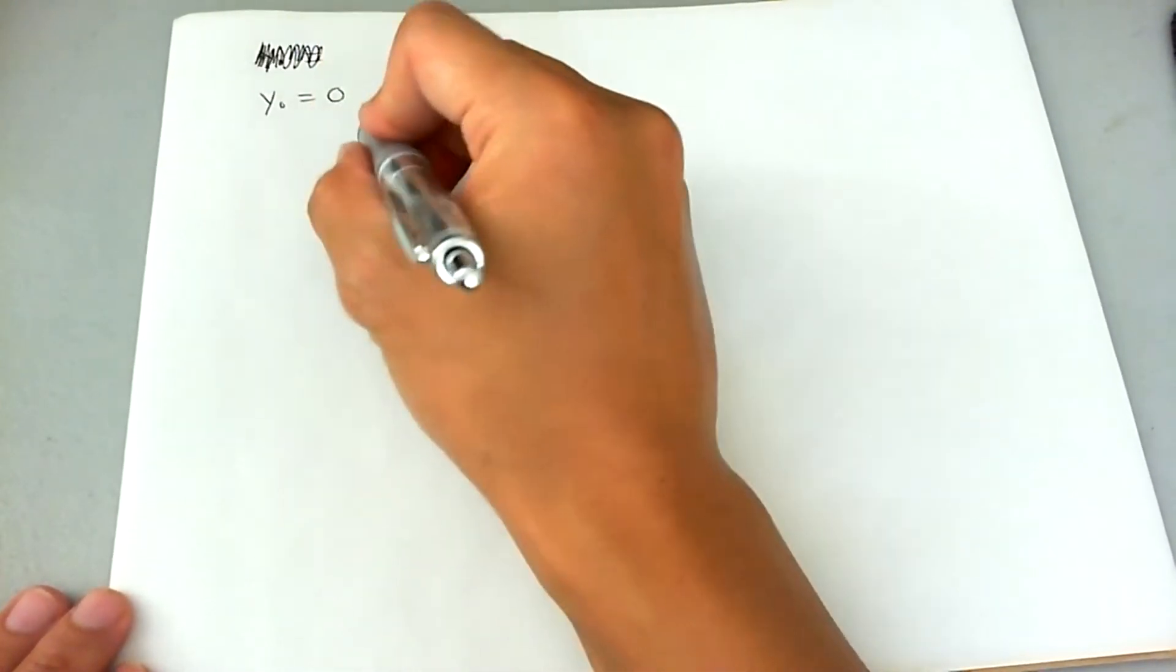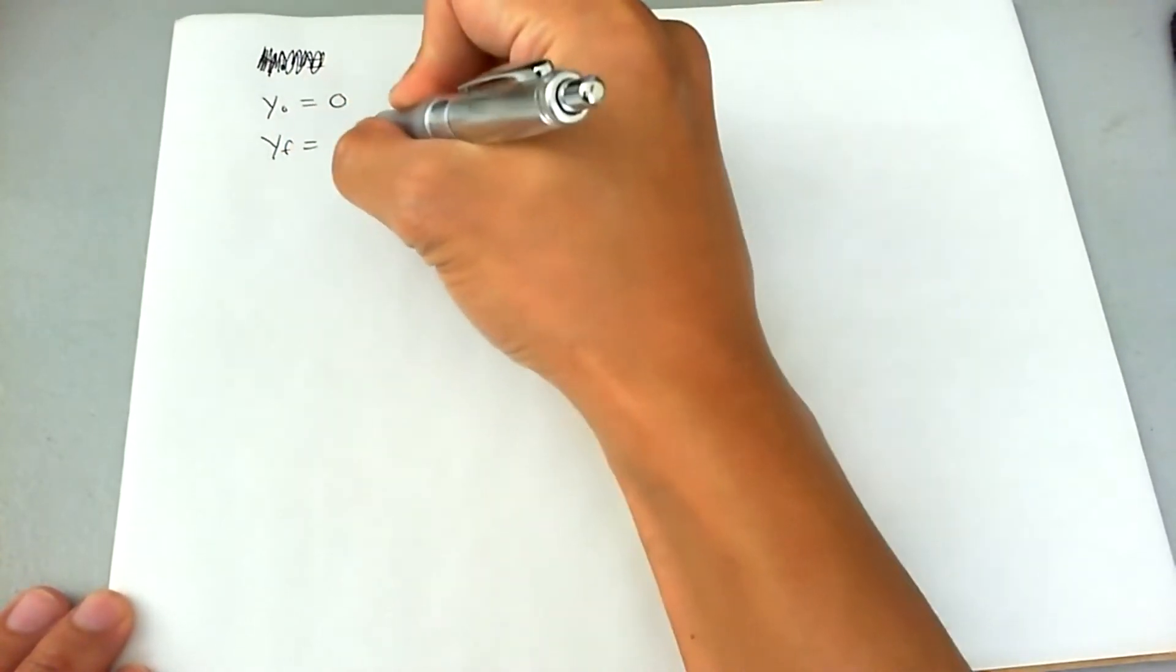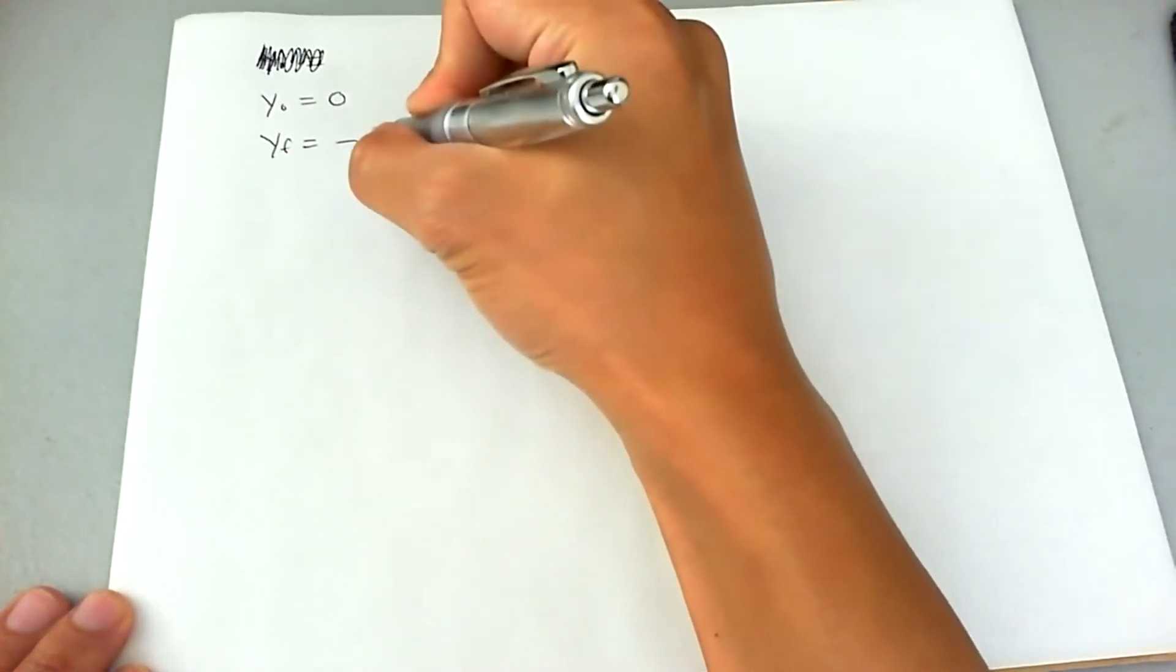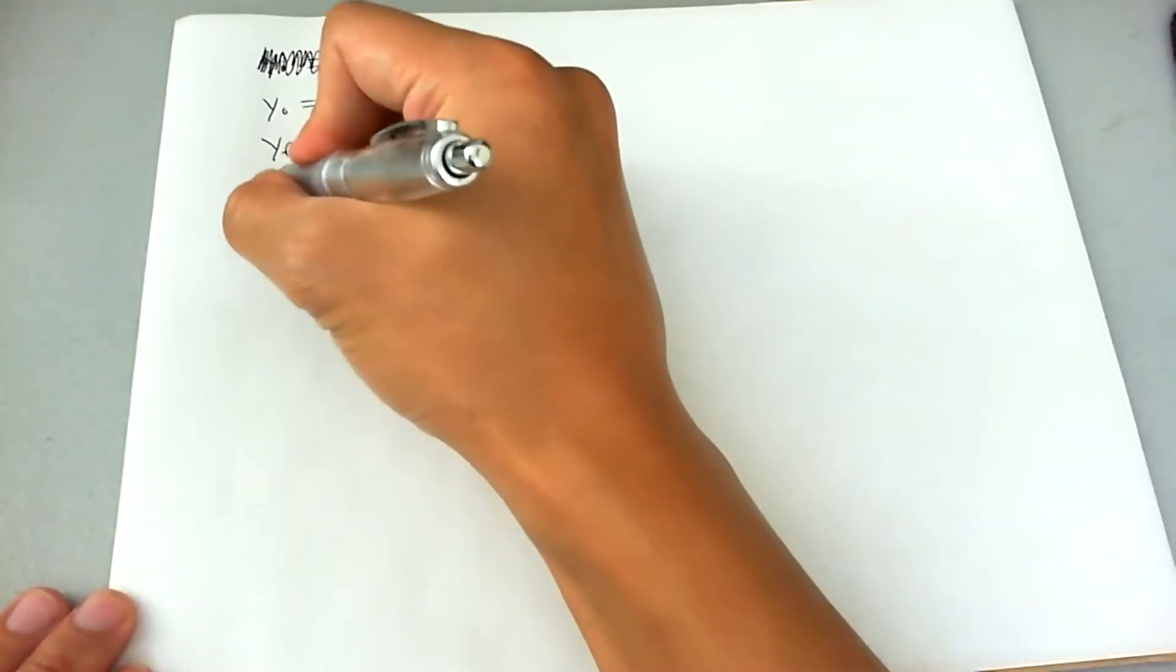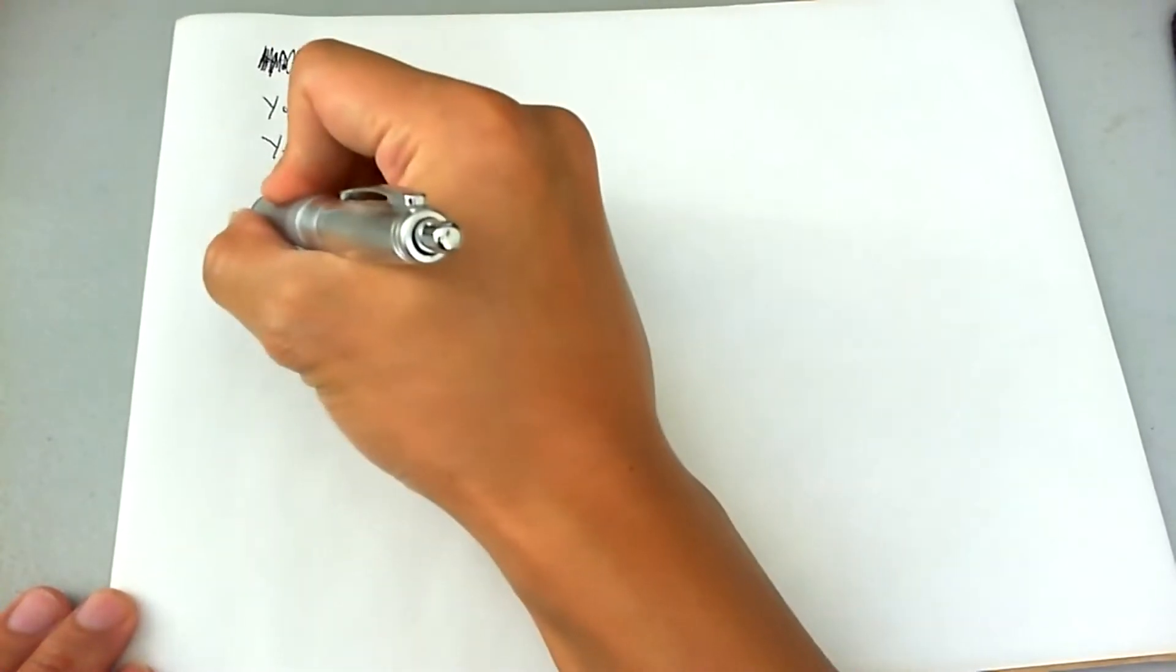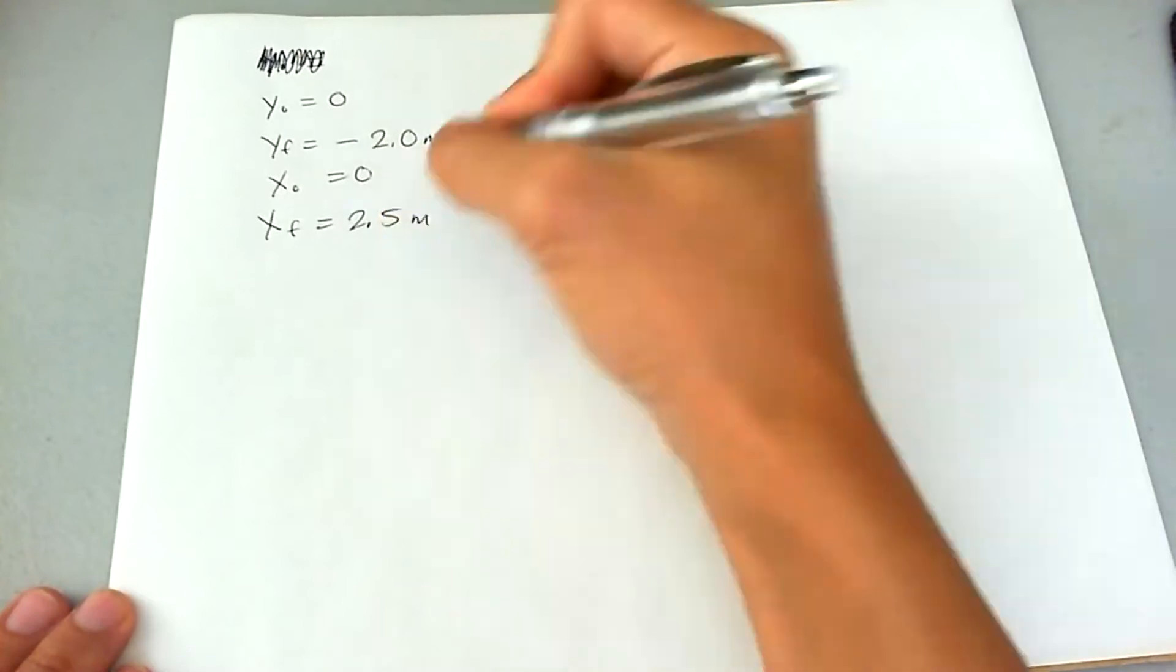So y-not is going to be zero. Y-final is then going to be negative 2.0 meters because it's going to be 2.0 meters down from the initial position. X initial is going to be zero, and the final X is going to be 2.5 meters to the right.